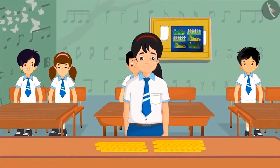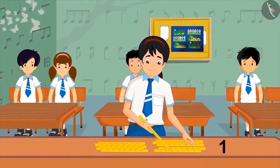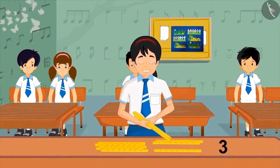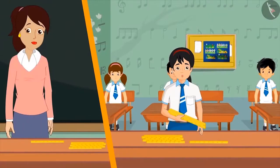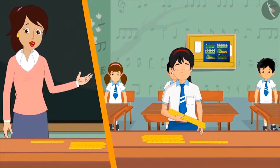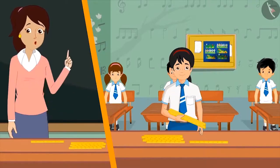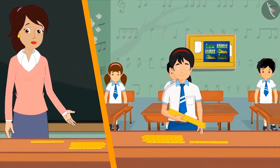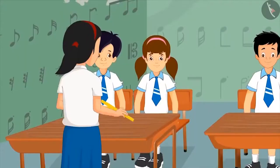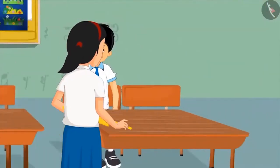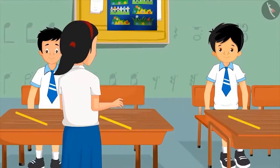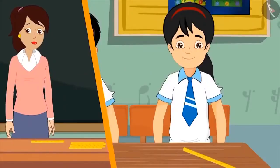Then Pinkie goes to the table and picks up 5 flutes one by one: 1, 2, 3, 4, 5. Here you go ma'am, I have 5 flutes. Very good Pinkie. Now give 1 flute to 1 child and then you keep 1 for yourself. Then Pinkie gives a flute to each child one by one and keeps a flute for herself. Very good Pinkie.